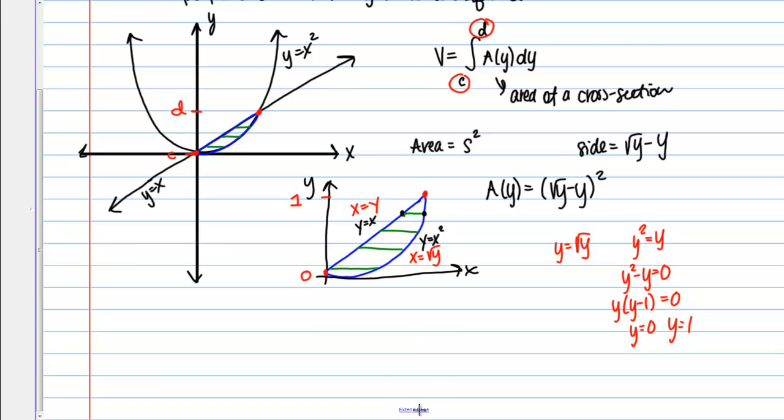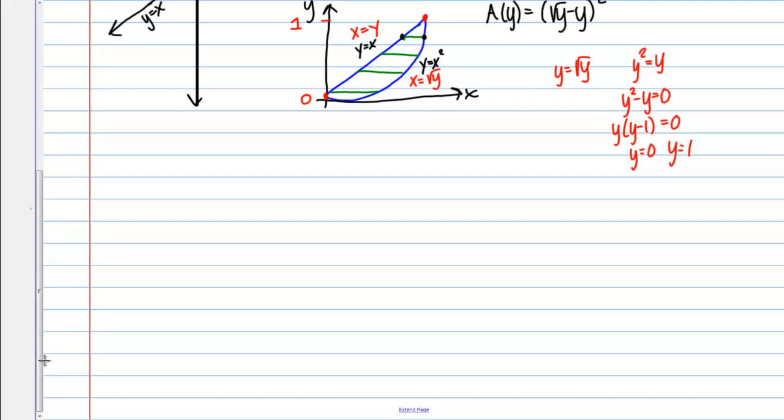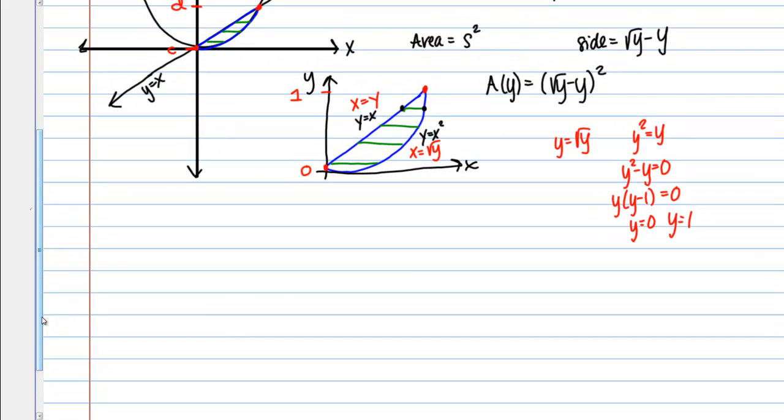So now I'm ready to actually completely set up my integral. I have all the pieces I need. So the volume is the integral from y equals 0 to y equals 1 of the area of one of these squares, which we said was square root of y minus y quantity squared, dy.